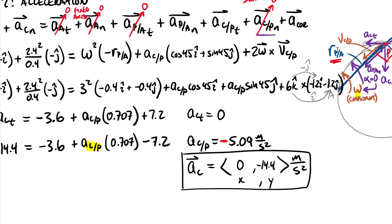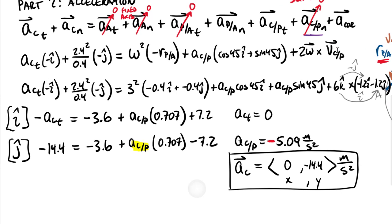I hope that was helpful for working through one of these complicated systems. We dealt with cross products, scalar-times-vector multiplications, and tracking many components — ultimately separating into i-hat and j-hat equations with two unknowns and two equations. Thanks for your attention today.